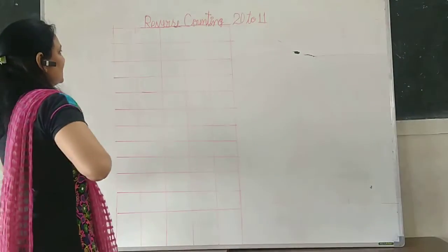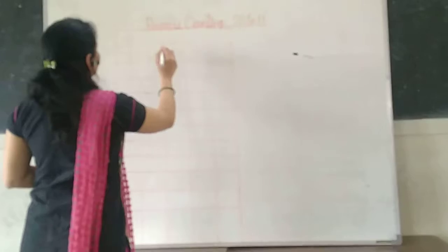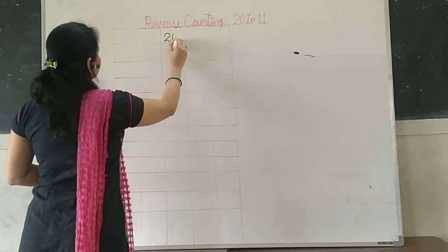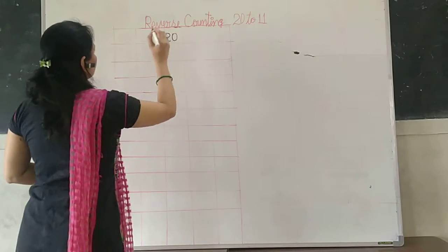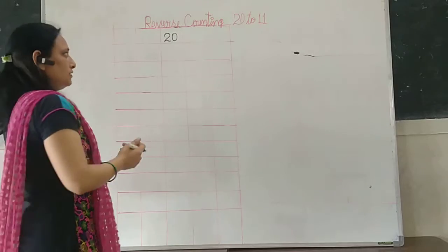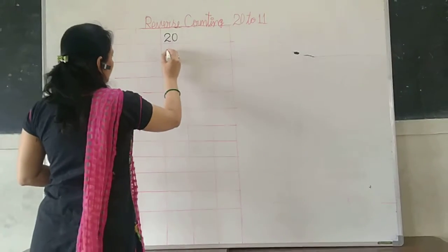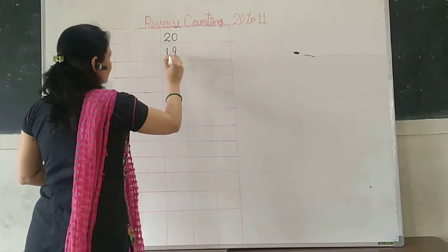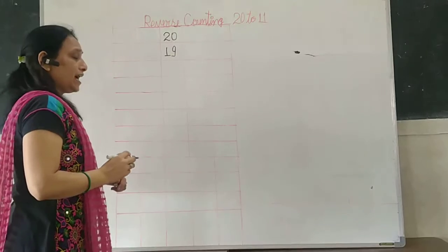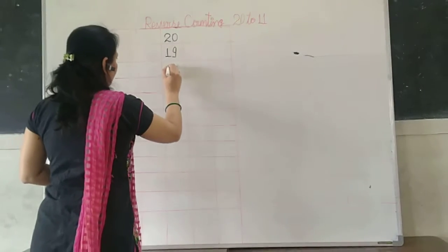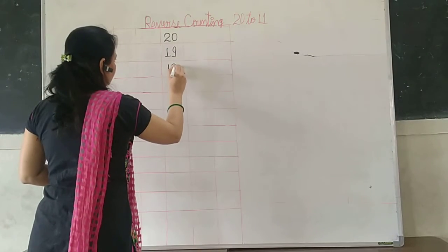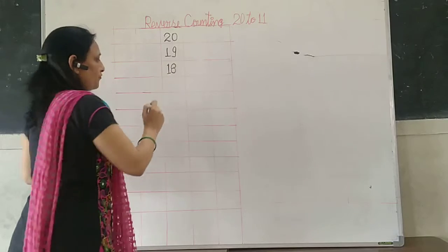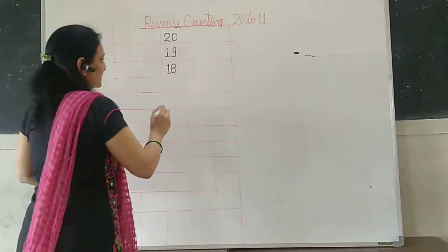let's go to start. 20. 20 just before. Very good. 19. 19 just before. 18. 18 just before. 17.